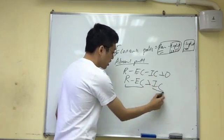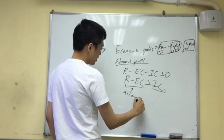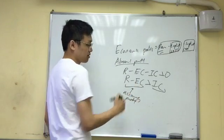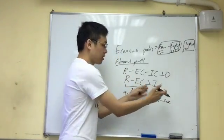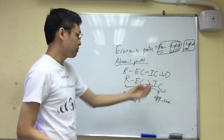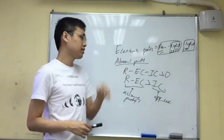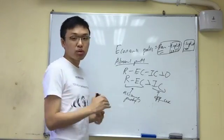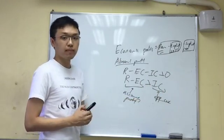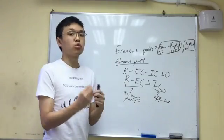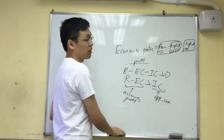Rearranging gives us: revenue minus explicit cost is greater than implicit cost. This is very important. The left side is the accounting profit — the actual money you make. The right side is the implicit cost, which is the opportunity cost — the profits in the next best alternative. So this means the current accounting profits are greater than the profits you could earn in the next best alternative. For example, if you're earning abnormal profits selling oranges, it means the accounting profits from oranges are greater than those from selling apples. That's why it's abnormal — you earn more than your next best alternative.